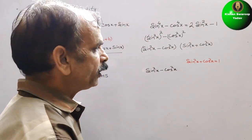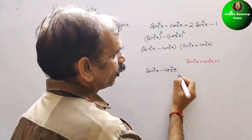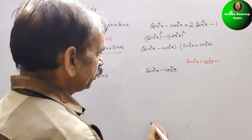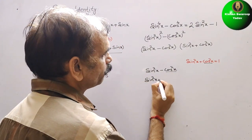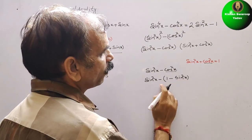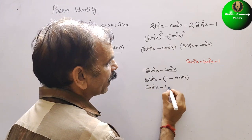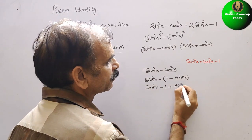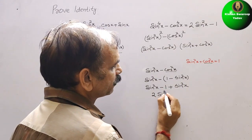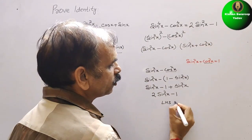Now we have to convert cos squared x, because they have given the result in terms of sin. So cos squared x is equal to 1 minus sin squared x. We write sin squared x minus (1 minus sin squared x). Opening the bracket gives sin squared x minus 1 plus sin squared x. So sin squared x and sin squared x together become 2 sin squared x minus 1.